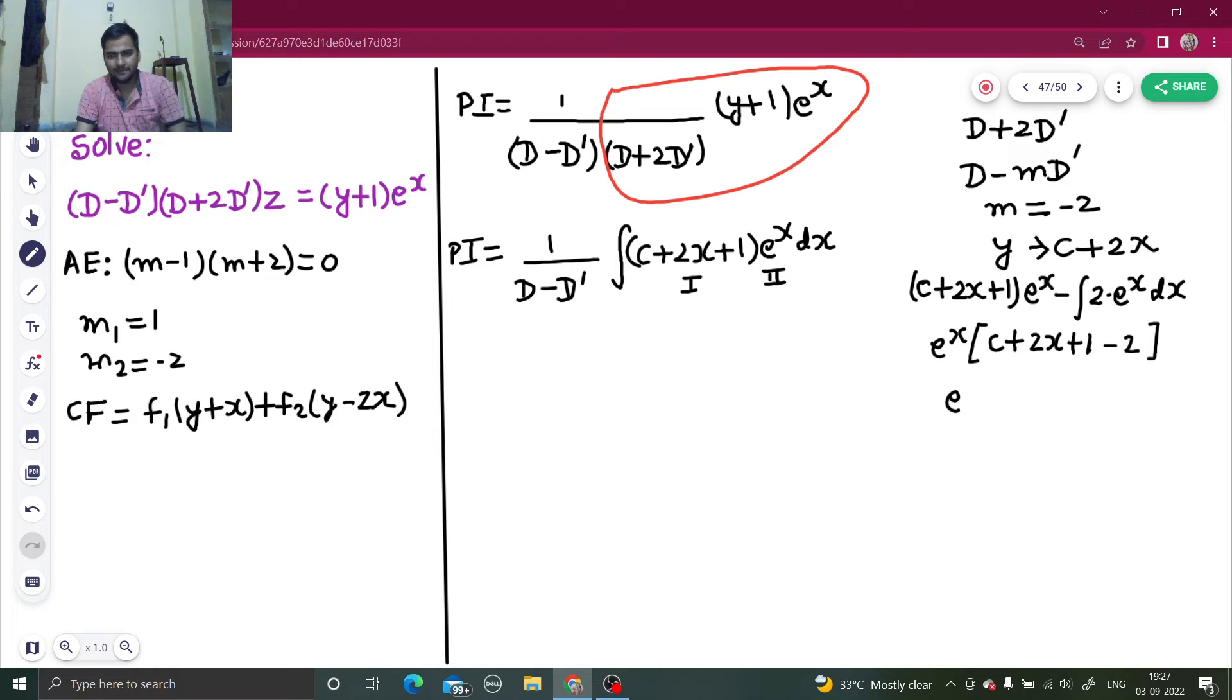You are getting e^x, c plus 2x will again be replaced by y, and 1 minus 2 is minus 1. This integral after solving and replacing back c plus 2x by y, you are getting 1 upon d minus d dash. Here you are getting e^x(y minus 1).